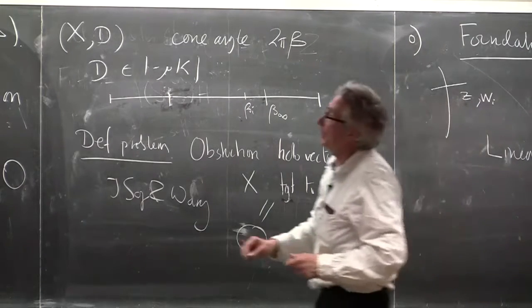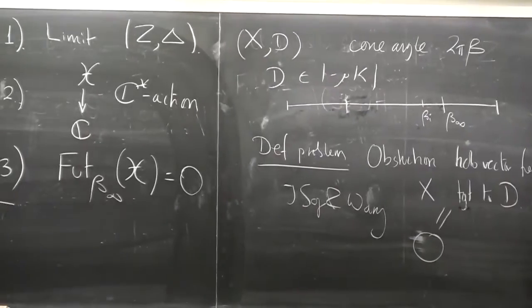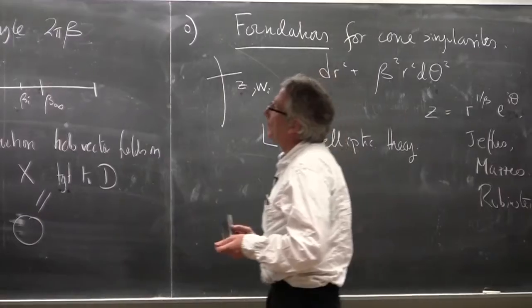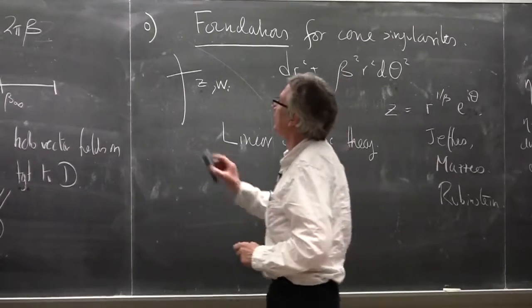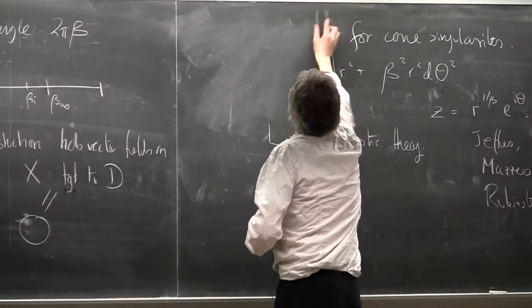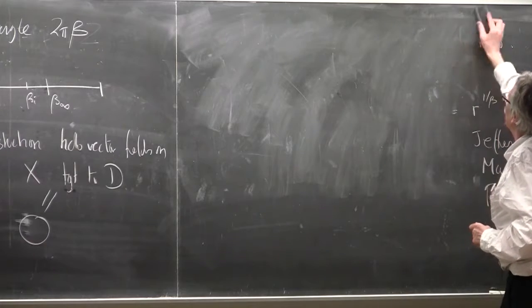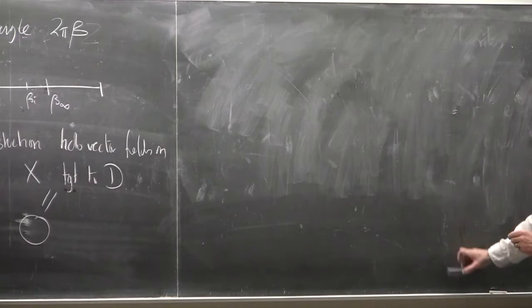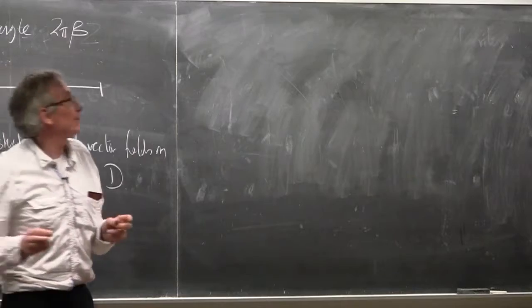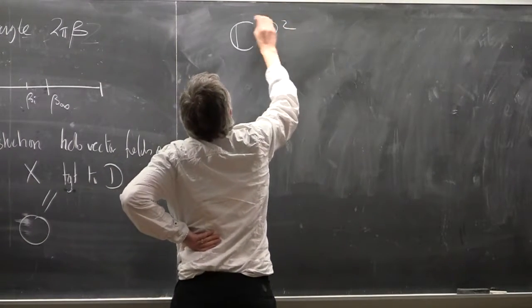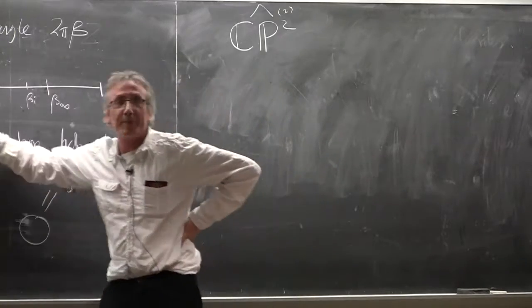Before diving into the technical things, let's give an example. Maybe what I'm going to say is one doesn't actually know precise proofs of every point, but it's an example where one really understands how things should work if you tried this. So let's try to do this program in a case where we know there's not a solution. Let's take CP2 and blow up at two points. So we know there's no Kähler-Einstein metric on this thing. So let's see what happens.